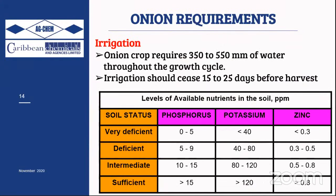Irrigation is essential for onion germination. The crop requires about 250–550 mm of water to grow. The greatest water demand occurs in the first two to three months up to bulb development, after which water application should be minimized to prevent bulb rotting. Irrigation is typically stopped 15–25 days before harvest to allow proper drying of the bulbs for a better harvest.